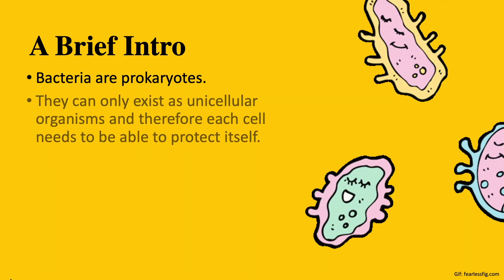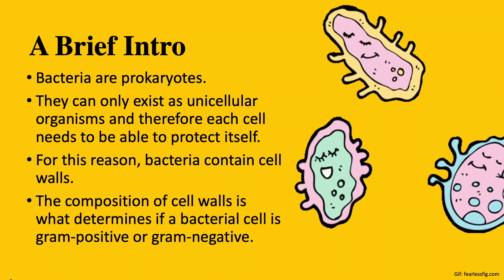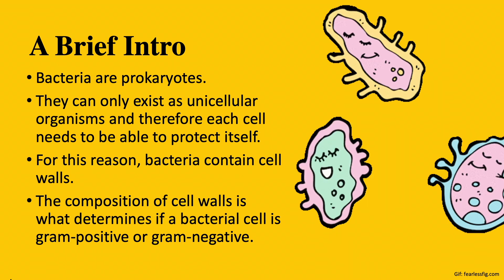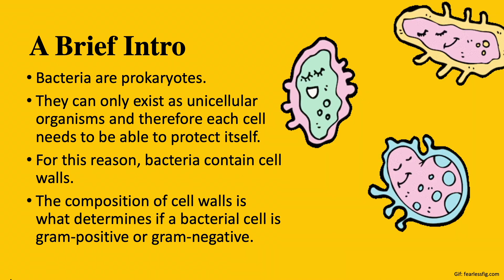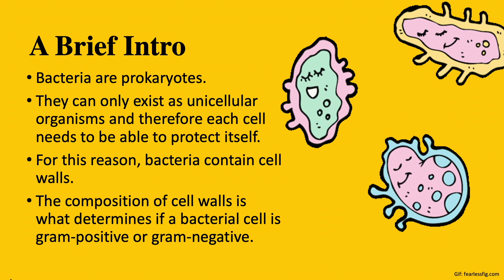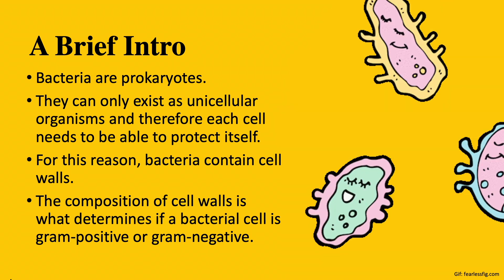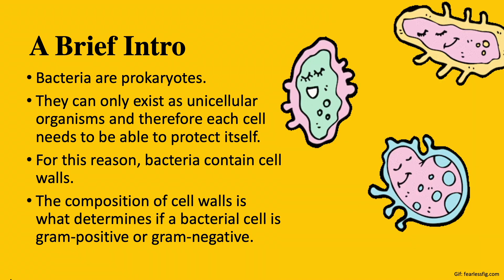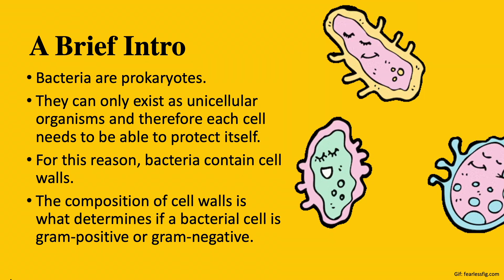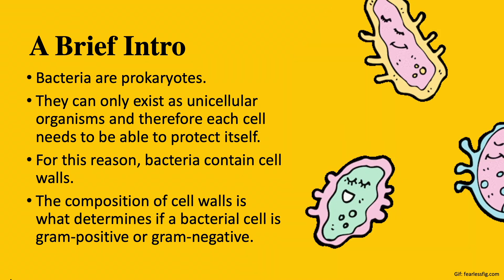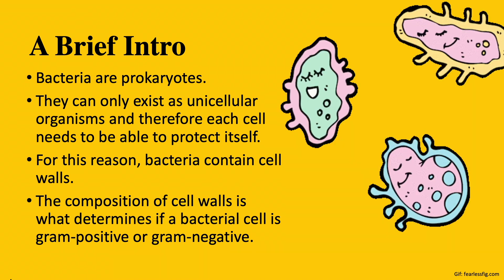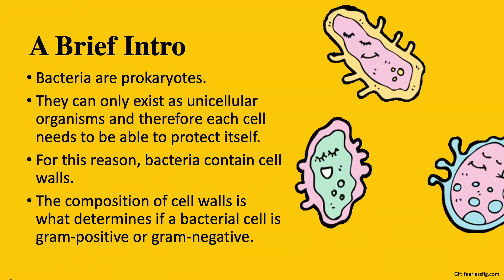Bacteria are prokaryotes. They can only exist as unicellular organisms, and therefore each cell needs to be able to protect itself. For this reason, bacteria contain cell walls. The composition of these cell walls can differ, and this is what determines if a bacterial cell is gram-positive or gram-negative.